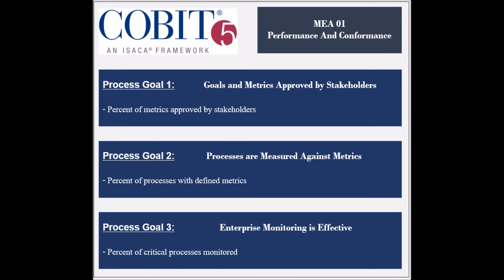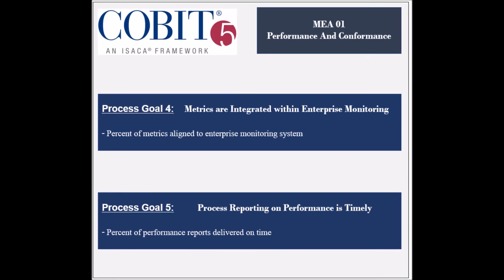The process has five process goals. The first goal is to ensure that metrics are approved by the stakeholders, measured by the percent of metrics approved by stakeholders. The second goal is to ensure that processes are measured against agreed-on metrics, measured by the percent of defined metrics. The third goal is to ensure that metrics are integrated within the enterprise monitoring systems, measured by the percent of metrics aligned to the enterprise monitoring system. The fifth goal is to ensure that process performance reporting is timely and effective, measured by the percent of performance reports delivered on time.